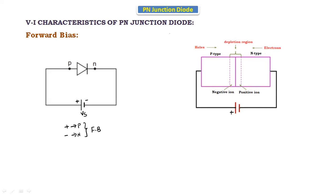Here we have the supply with positive and negative terminals, Vs, and the two regions: P-type and N-type. In the P-type, the majority carriers are holes, indicated by the positive sign, and the minority carriers are electrons, indicated by the negative sign. In the N-type, the minority carriers are holes. In between the P-type and N-type there is a depletion region, which has negative ions and positive ions.